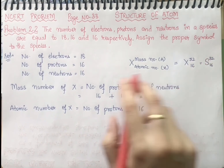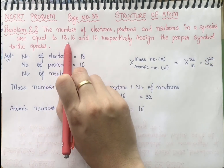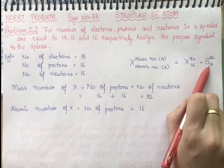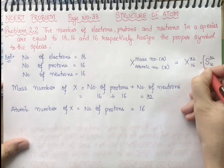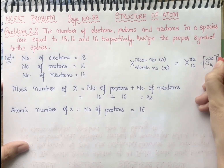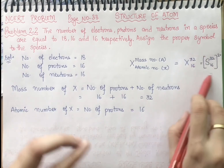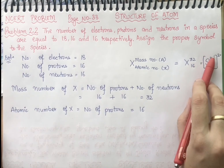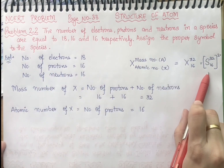But they are saying the number of electrons are 18, which means this sulfur is acquiring a negative charge. So we will mention the negative charge over here. This is the complete symbol for the respective species.